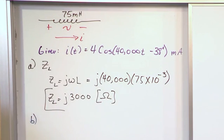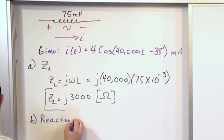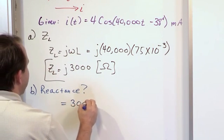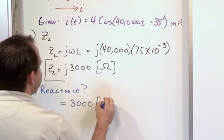So part B then might ask you, what is the reactance of this inductor? All right, now you don't really even need to calculate it again, because the reactance is really just taking the impedance and stripping away the j. So 3,000, and you can use the same unit of ohms.